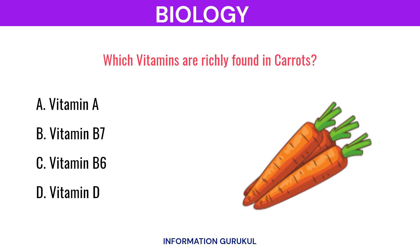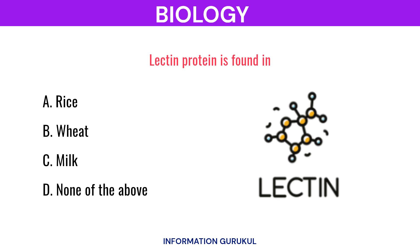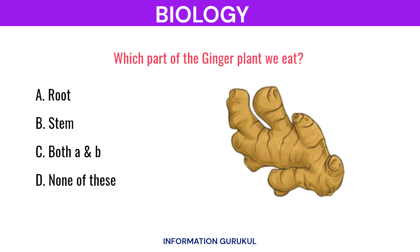Which vitamins are richly found in carrots? Vitamin A. Lectin protein is found in Wheat. Which part of the ginger plant do we eat? Stem.